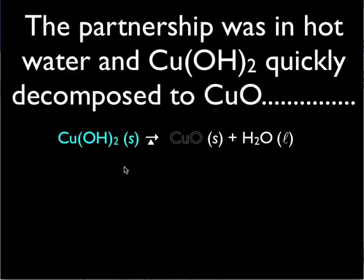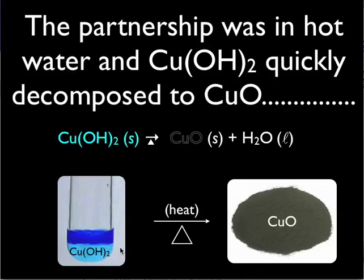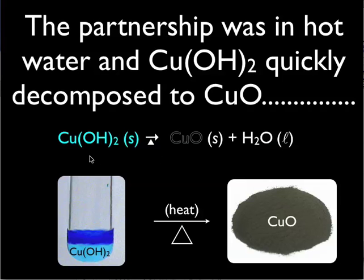Once we have our copper two hydroxide sample, we can change that simply by adding heat. It's not long before you go from having a blue-green precipitate to a blackish precipitate. This is due to the fact that we are decomposing copper hydroxide into two other substances: copper two oxide and water. This is a decomposition reaction because we're going from one compound and breaking that down into two other compounds.